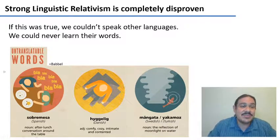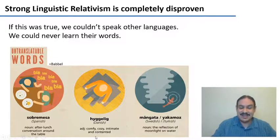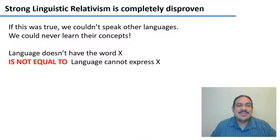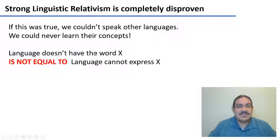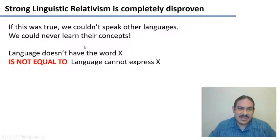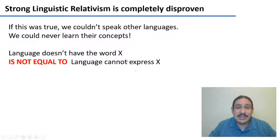And by the way, notice that people call these 'untranslatable words,' but the translation is right here. So that's one reason why this hypothesis has to be false — because even if a language lacks the word for something, it's not true that we cannot express that thought. The concept of hygge is clearly explainable in English, even if we don't have the word for it.